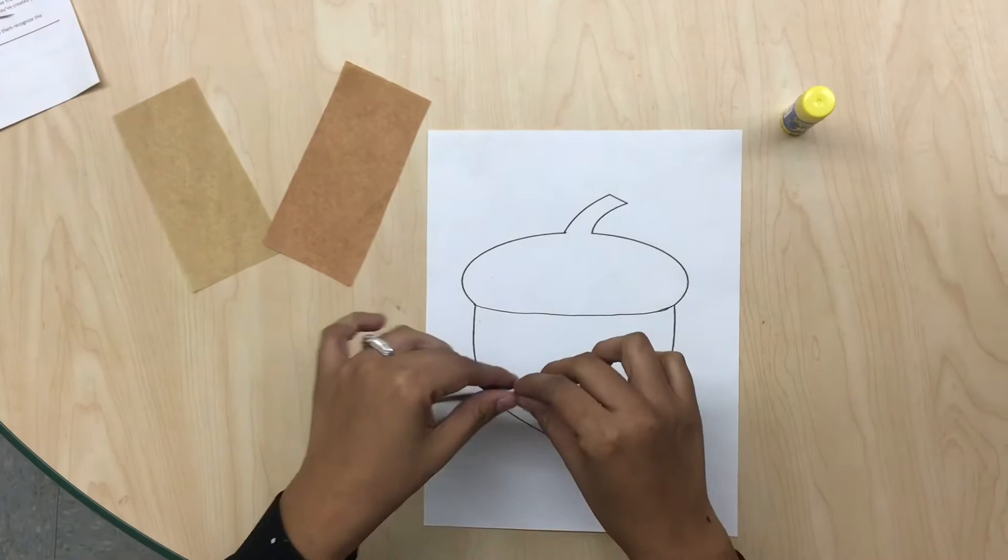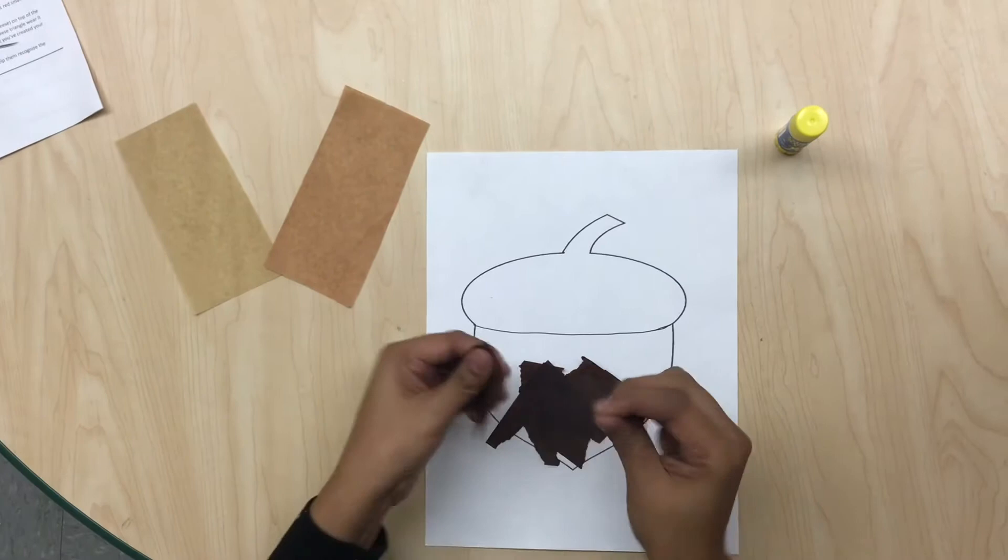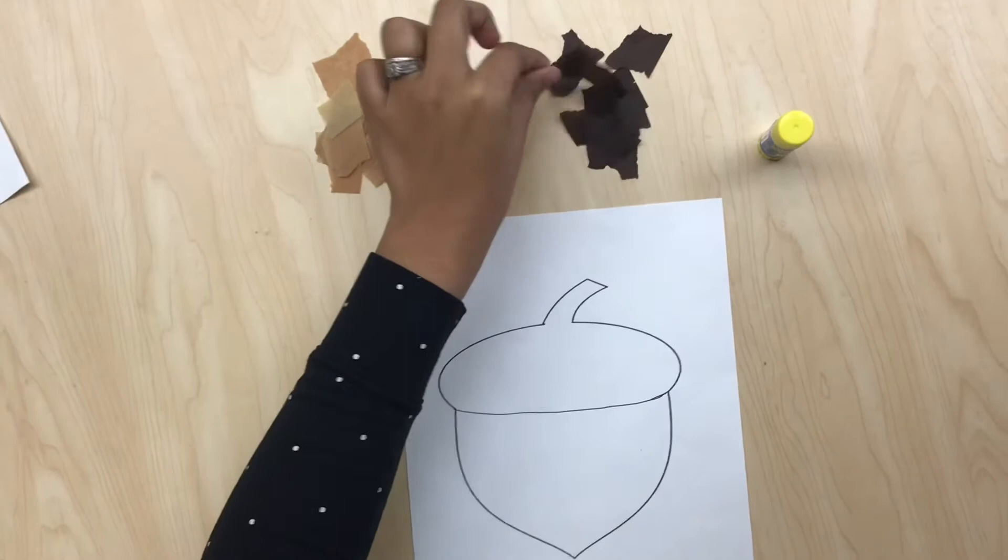First, we're going to get our tissue paper and we're going to rip them with our hands. This is going to help you with your fine motor skills.